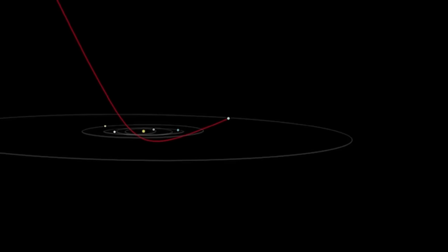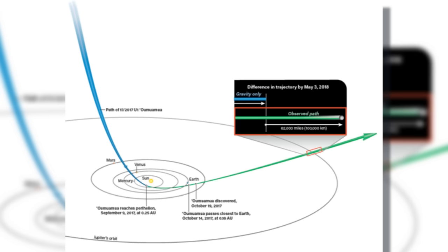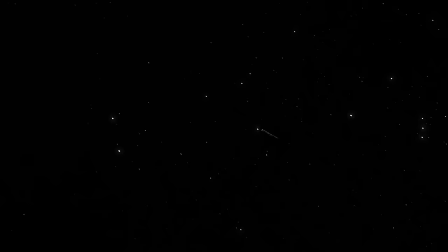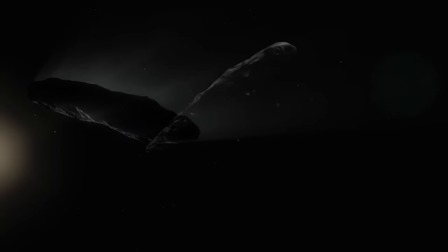With Oumuamua's imminent exit from our solar system, the scientific community gathered resources and expertise to understand this enigma. However, the influx of detailed data didn't simplify matters as one might expect. Instead, the more information that surfaced, the more questions arose. Oumuamua's distinct characteristics and baffling behavior left scientists with more mysteries than solutions.